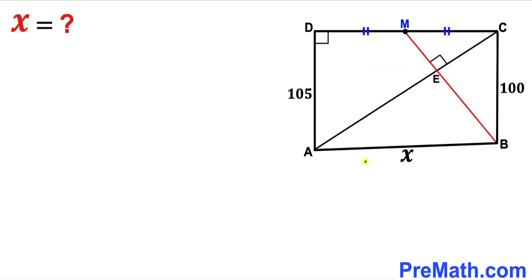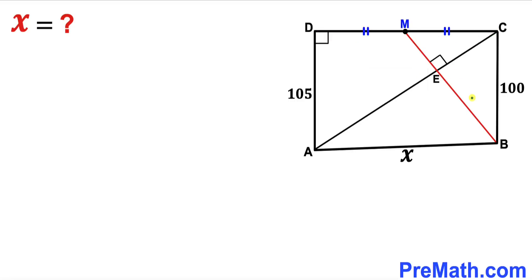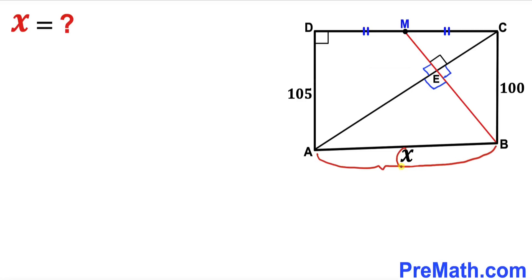Welcome to pre-math. In this video we have got this quadrilateral ABCD, such that side length BC is 100 units, side length AD is 105 units, and angle ADC is 90 degrees. M is the midpoint of side CD, so DM equals MC. The diagonals BM and AC intersect at point E such that all angles at E are 90 degrees each. We are going to calculate distance AB, represented by X.